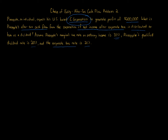This is all about a C corporation — this is just going through double taxation and showing you that a C corporation is subject to two levels of tax. The first level is at the entity level, and the second level is at the owner/shareholder level on distribution. Let's go ahead and calculate the first level of tax.